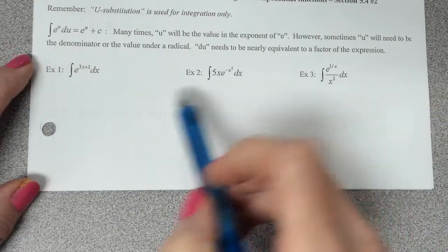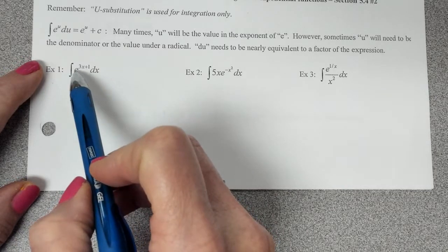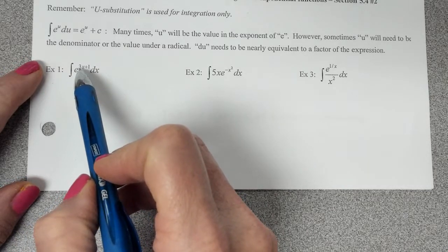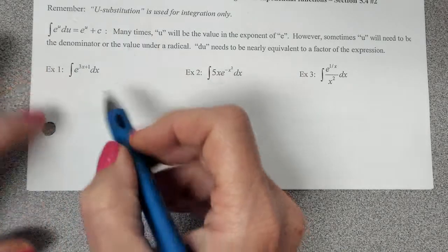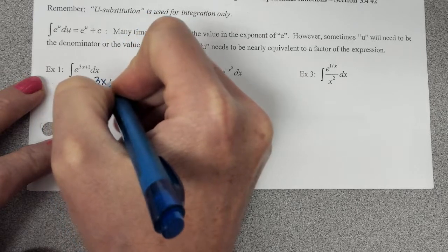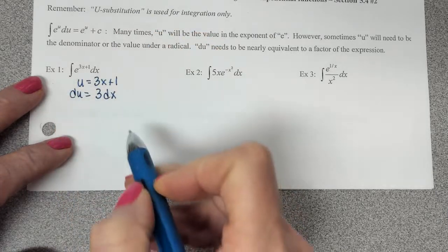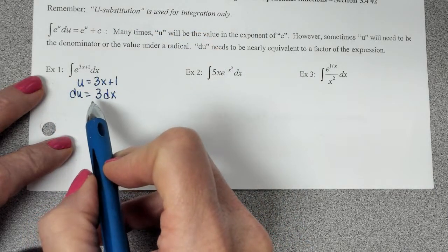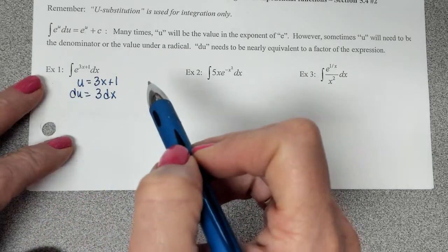When you're integrating, we have to be thinking ahead. If I let u equal this exponent, will the derivative be close to the rest of the problem? The reason it will be is because if I let u equal 3x plus 1, that derivative is just 3dx. And a constant is fine. It's always fine to have a constant because you can get rid of that constant so easily.